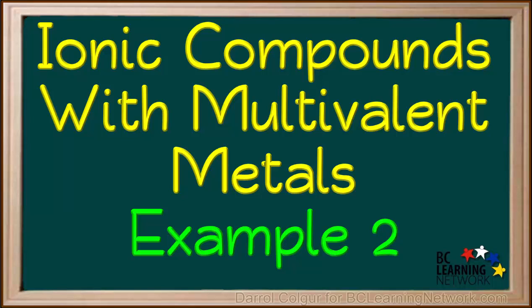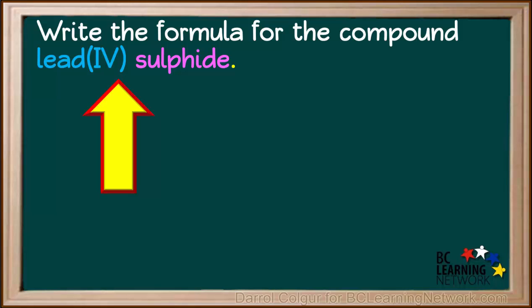In this example, we'll write the formula for another ionic compound with a multivalent metal. We're asked to write the formula for the compound lead four sulfide.